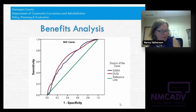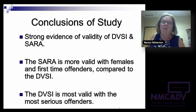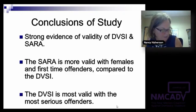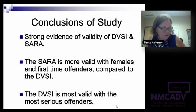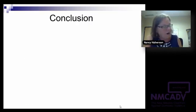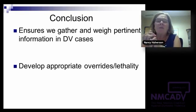Basically, we're going to make sure we gather and weigh pertinent information for DV cases. We're going to develop appropriate overrides — using the DVSI as an override for existing corrections risk scales that don't do a good job isolating DV-related risk factors. We're going to provide the court with accurate information for decision-making and use the risk data to case plan and address the level of risk we see. But the thing we're not going to do is tell a victim that their offender scored a two so they should feel safe. We never want to be in that position.